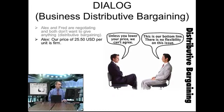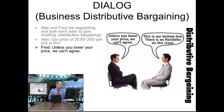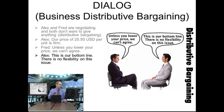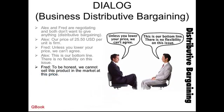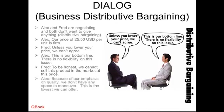Alex says: our price of $2,550 USD per unit is firm. Fred says: unless you lower your price, we can't agree. Alex responds: this is our bottom line — there is no flexibility in this issue. Fred says: to be honest, we cannot sell this product in the market at this price. And Alex comes back with: because of our emphasis on quality, we don't have any space to maneuver — this is the lowest we can offer.